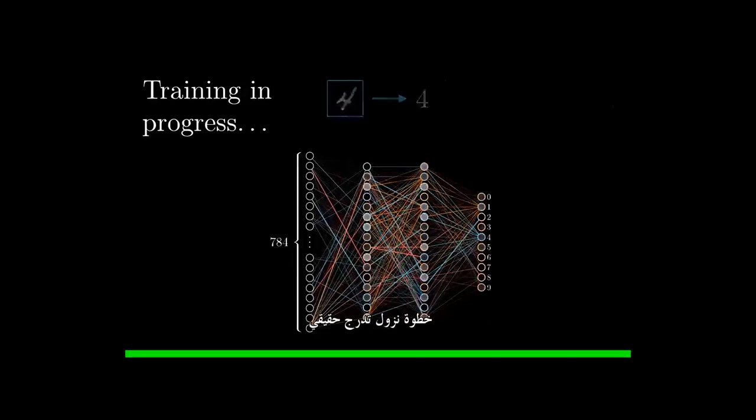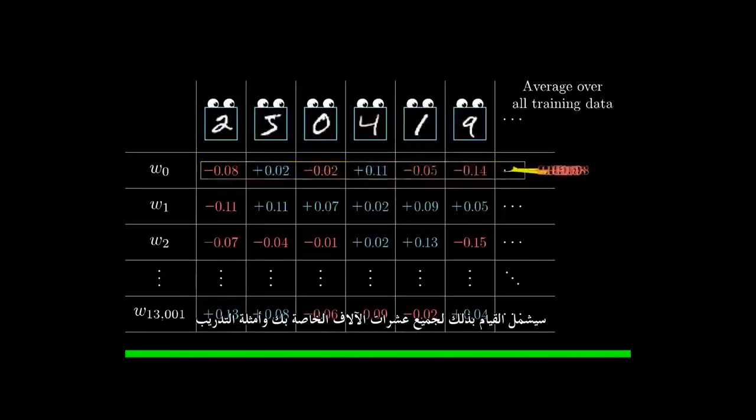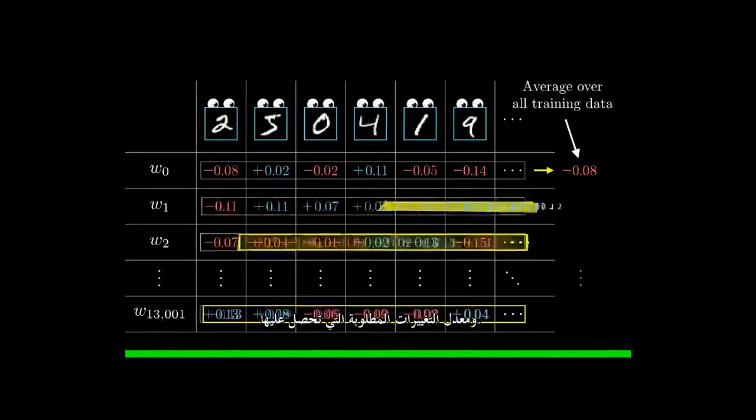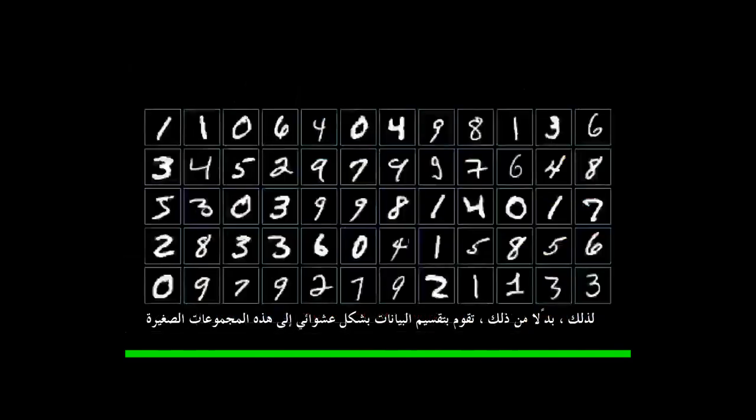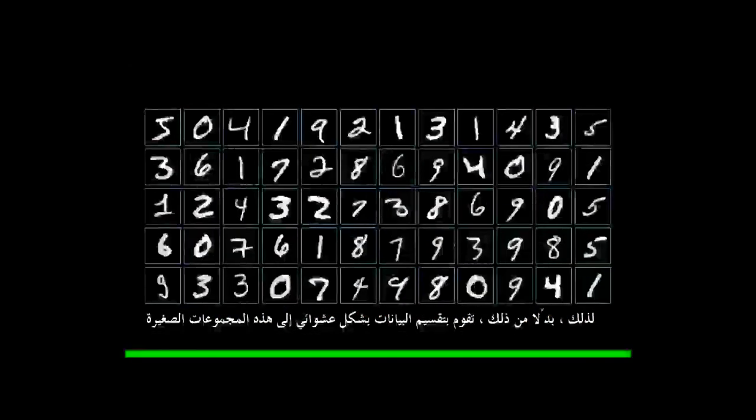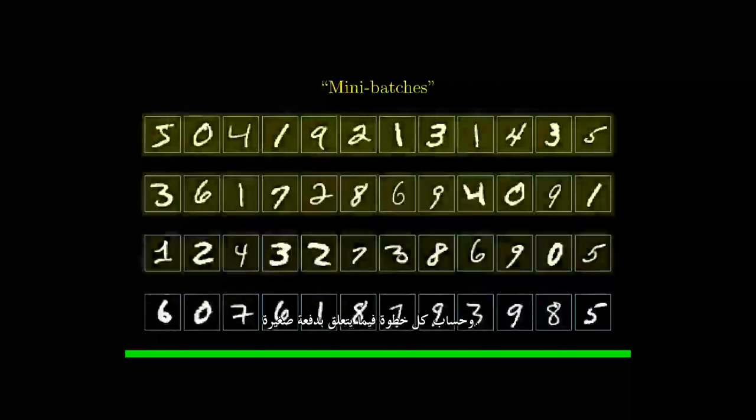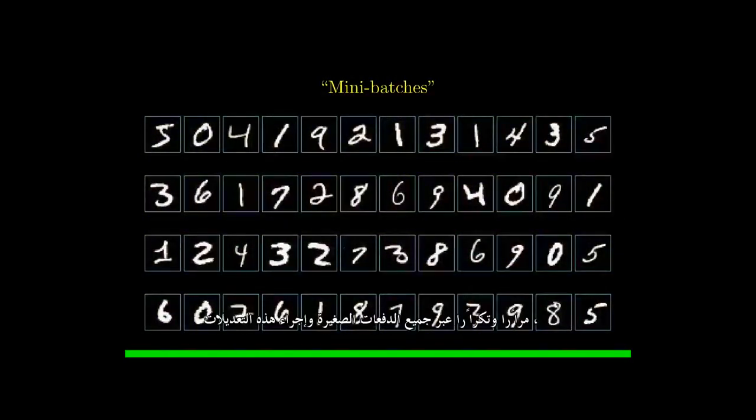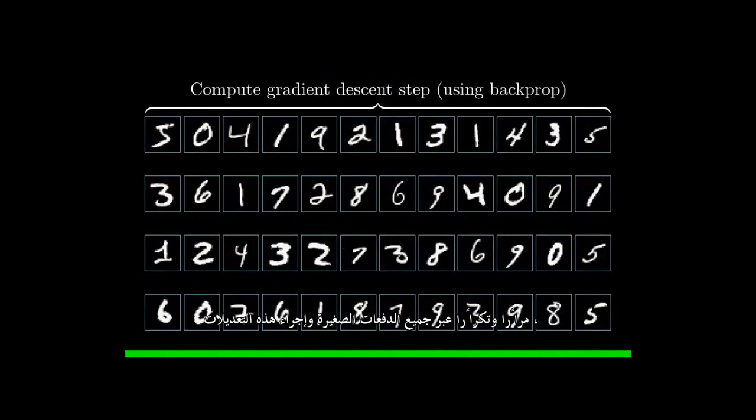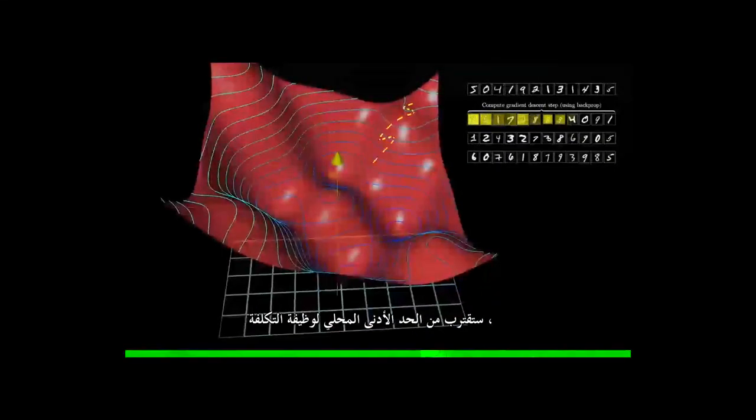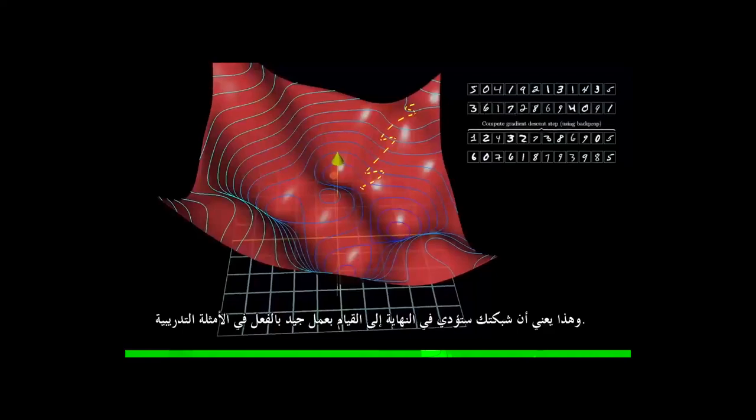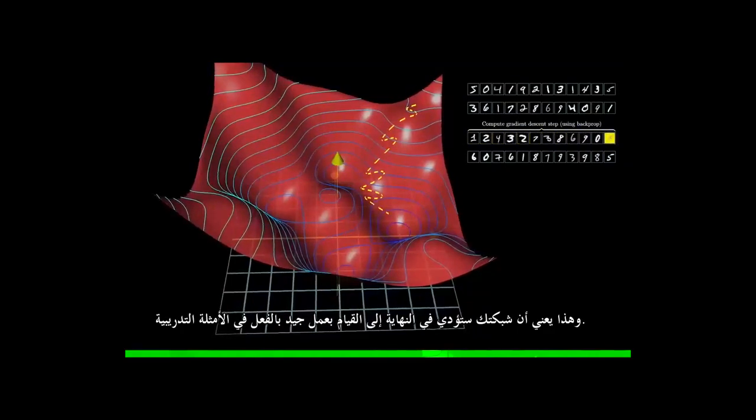A true gradient descent step would involve doing this for all your tens and thousands of training examples and averaging the desired changes that you get. But that's computationally slow, so instead you randomly subdivide the data into these mini-batches and compute each step with respect to a mini-batch. Repeatedly going through all of the mini-batches and making these adjustments, you will converge towards a local minimum of the cost function, which is to say your network is going to end up doing a really good job on the training examples.